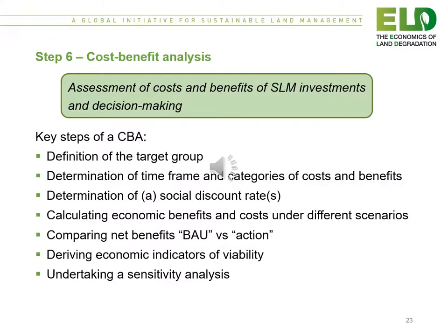Step six involves a cost-benefit analysis — the assessment of the costs and benefits of sustainable land management investments and decision making. The key steps include the definition of the target group, the determination of the time frame and categories of costs and benefits, the determination of a social discount rate, calculating economic benefits and costs under different scenarios, comparing net benefits of business as usual versus the take action step, deriving economic indicators of viability, and undertaking a sensitivity analysis.